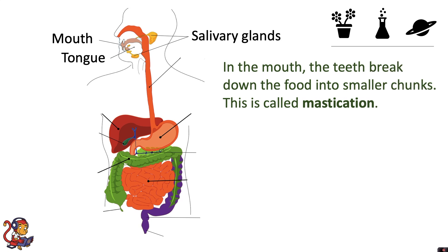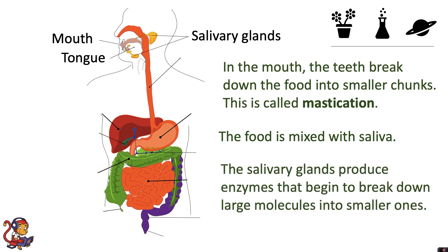In the mouth the teeth break down the food into smaller chunks. This is called mastication. The food is mixed with saliva, and the salivary glands produce enzymes that begin to break down large molecules into smaller ones.